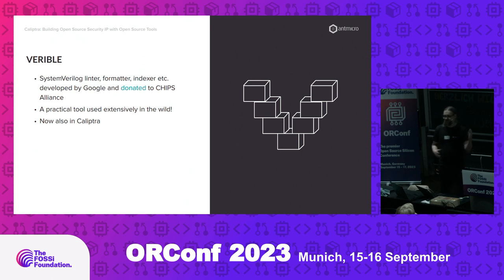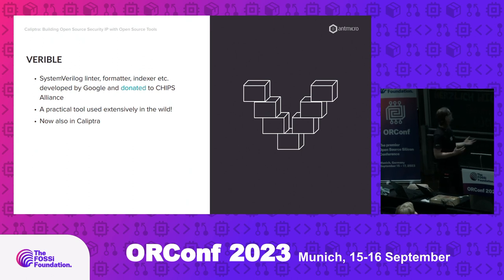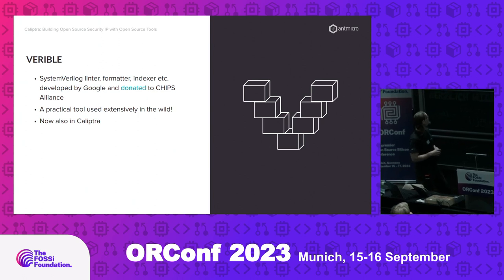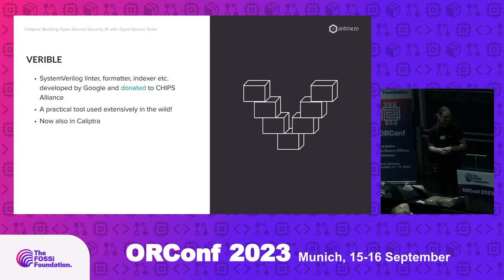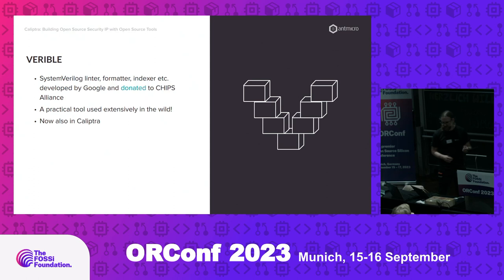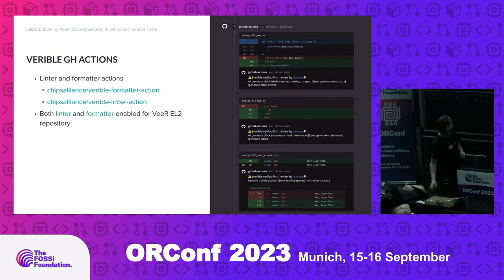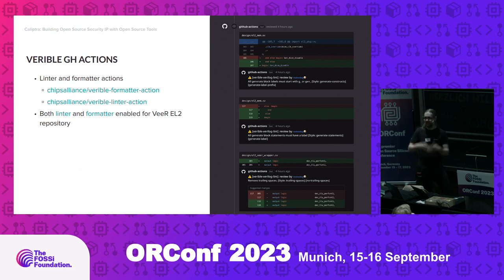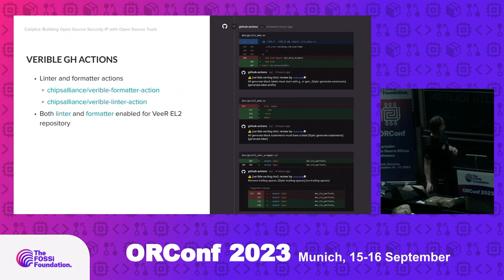We're using a bunch of tools. One of them is Verible, which has been mentioned already — it's a SystemVerilog linter, formatter, indexer, and so on. The important thing is it's actually being used. It's pretty popular, and right now it's also being used in Calyptra, helping enforce the same standards for coding. We even have it implemented in GitHub Actions — a standardized GitHub Action that helps you lint and format code properly. You can get nice feedback in your pull requests, and they're all turned on for the VIR EL2 repository. Hopefully we can turn them on for the whole of Calyptra in the future.